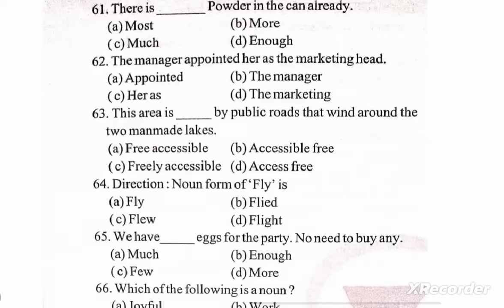Hi everyone, today in this video we are going to do some questions of English. Question number 61: there is blank space powder in the can already. Options: A) most, B) more, C) much, D) enough. The correct option is A — there is most powder in the can already.